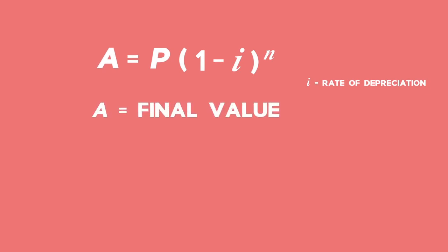A in your formula represents the final value, P is your initial value, and N will be your period.